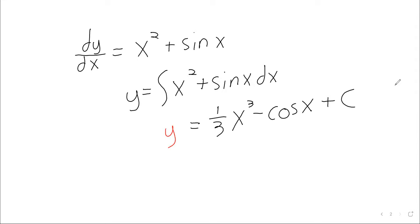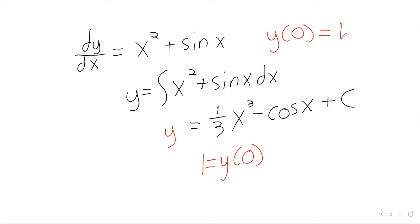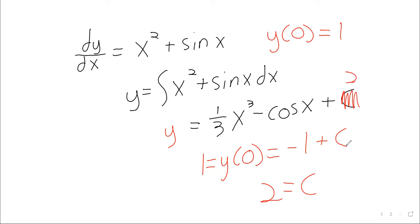But if you state an initial value — maybe y(0) equals 1 — that initial value allows you to solve for C. We get 1 equals y(0) equals 1·(one-third·0³) minus cos(0) plus C, so 1 equals negative 1 plus C, giving C equals 2. Your solution is now unique: one-third x³ minus cos(x) plus 2.